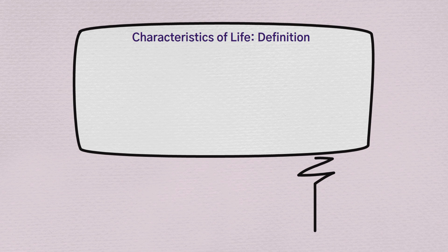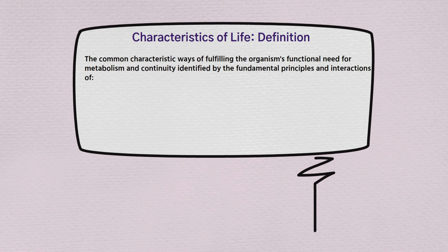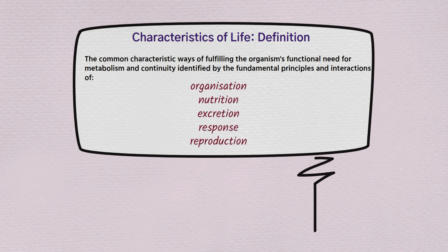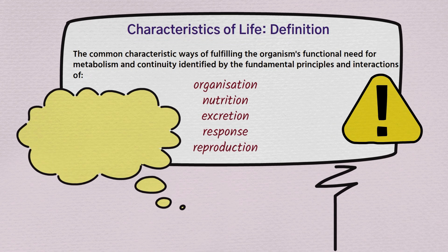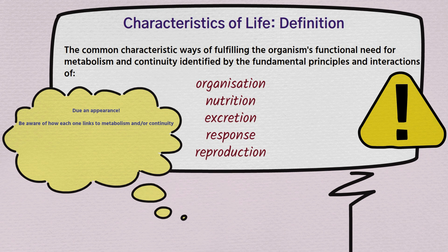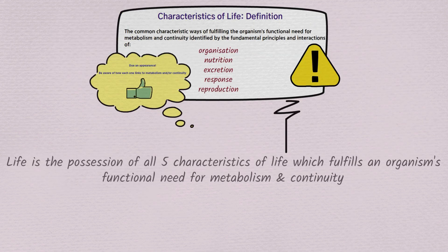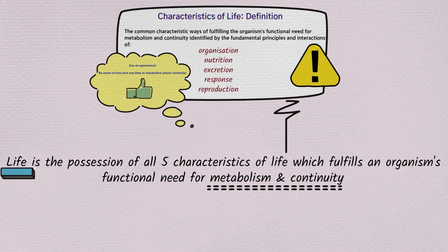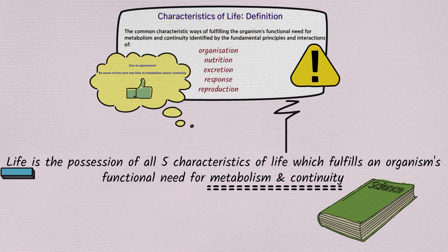It's important that you can define the characteristics of life. The definition is: the common characteristic ways of fulfilling the organism's functional need for metabolism and continuity, identified by the fundamental principles and interactions of organisation, nutrition, excretion, response, and reproduction. An alternative definition: life is the possession of all five characteristics of life which fulfils an organism's functional need for metabolism and continuity.